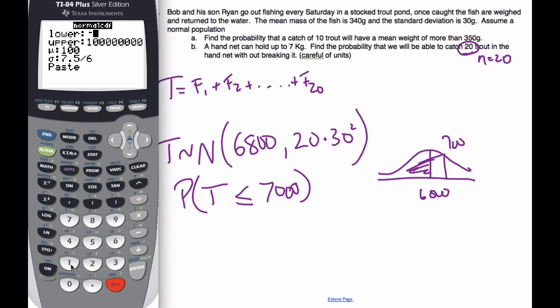So my lower limit is some negative big number. This is going to be 7,000. The mean is 6,800, and the standard deviation is going to be the square root of 20 times 30 squared.